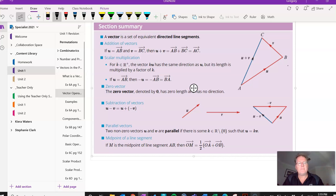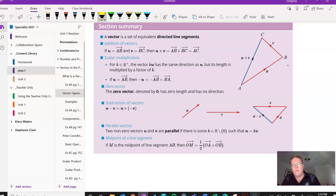So if we have a look at the formula for midpoint, OM is a half of OA plus OB, assuming that we find the midpoint of the segment AB.